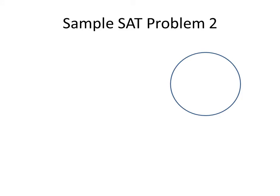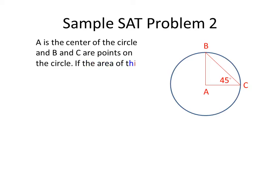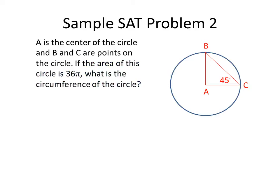Now we're going to move on to SAT sample problem number 2. We have a circle with a triangle inside the circle. We're given that A is the center of the circle, and B and C are points on the circle. If the area of the circle is 36 pi, what is the circumference of the circle? Take a second to solve that problem, hit pause, and come right back afterwards.